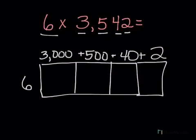Okay, so now I just need to fill in the boxes. The first one is going to be 6 times 3,000. 6 times 3 is 18, plus 1, 2, 3 zeros. So 6 times 3,000 is 18,000.